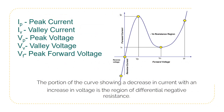The tunnel diode characteristics graph is shown where IP is peak current, IV is valley current, VP is peak voltage, VV is valley voltage, and VF is peak forward voltage. The portion of the curve showing a decrease in current with an increase in voltage is the region of differential negative resistance. The range of voltage and current for this region is quite small, and thus any power generated from an oscillator using this negative resistance property would also be fairly small.